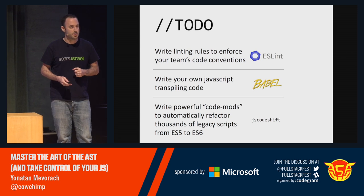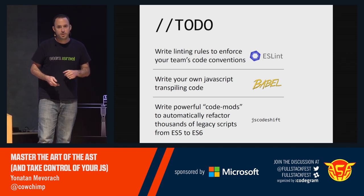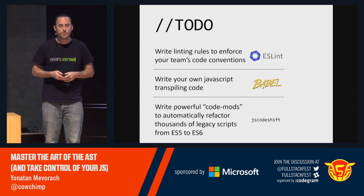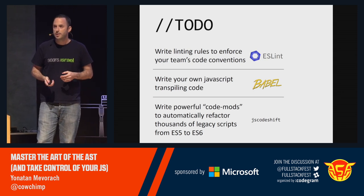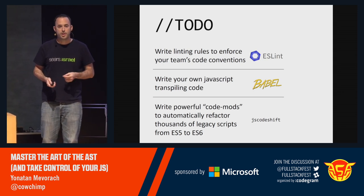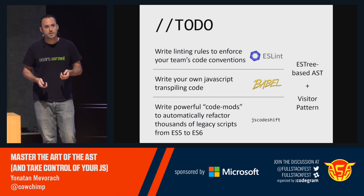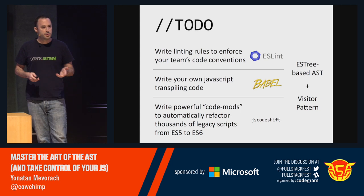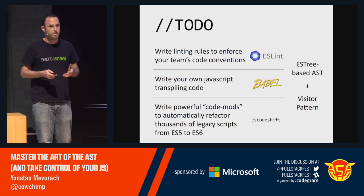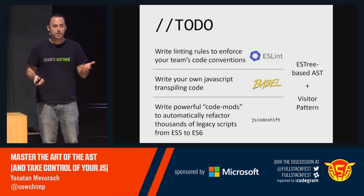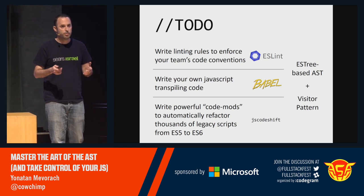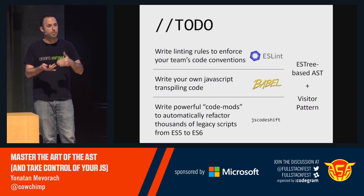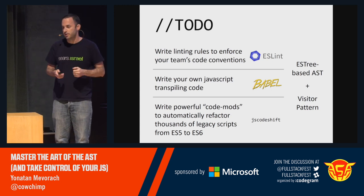It's meant to be extensible. So they pointed me to the docs explaining exactly how to create your own rule, and I learned that in order to create an ESLint rule, I have to learn two concepts: ASTs — abstract syntax trees — and the visitor pattern. It wasn't very difficult. After learning the basis of it, I was able to write my own ESLint rule, which became a part of our build chain. Now, whenever somebody violated this convention, the build would break, we would catch it early and fix it.